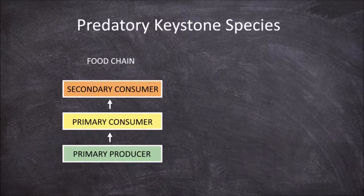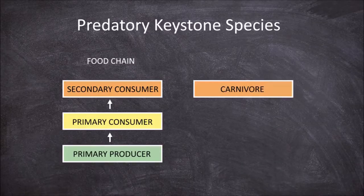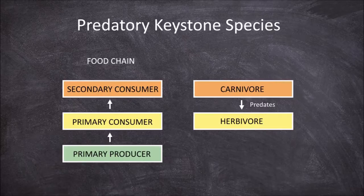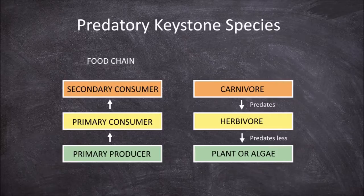Predatory species as keystone species occur when the predator predates on another predator or consumer down the food chain, and doing so helps reduce its predation on many species below it, keeping the community in balance. These are called top-down communities.